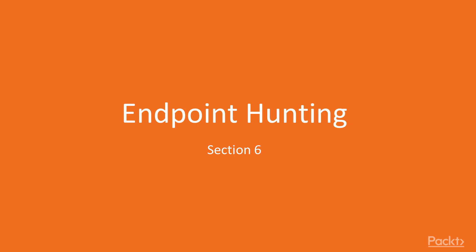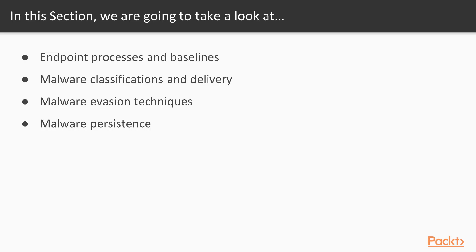Hello and welcome to section 6 of the course, Endpoint Hunting. In this section we are going to take a look at various points. We are going to learn about endpoint processes and baselines, malware classifications, and how you can deliver malware in a victim machine. We will also learn how you can bypass malware in various kinds of systems, and we will learn about malware persistence.